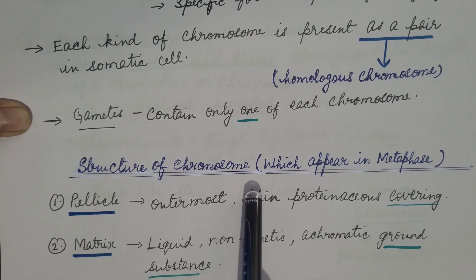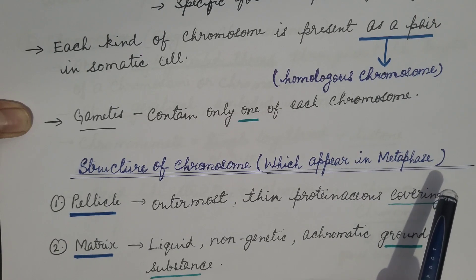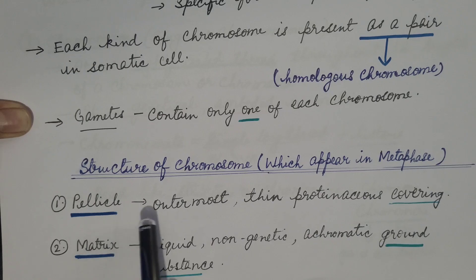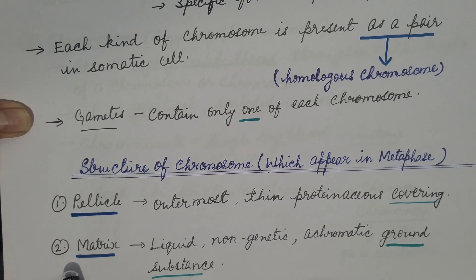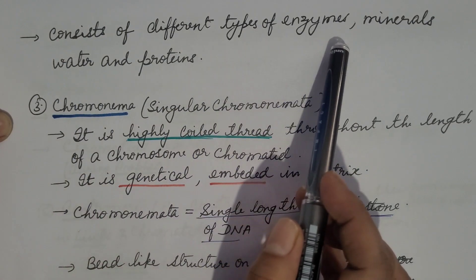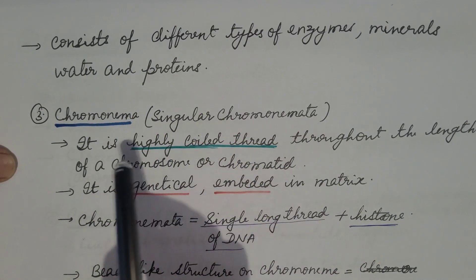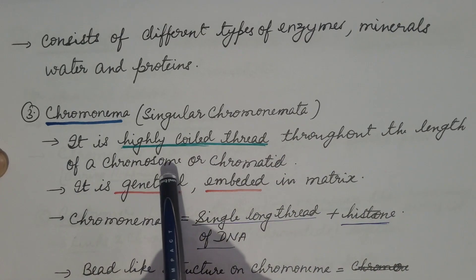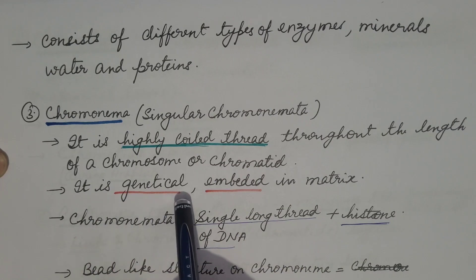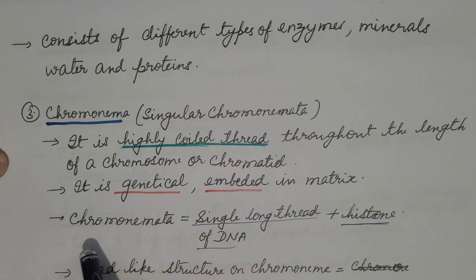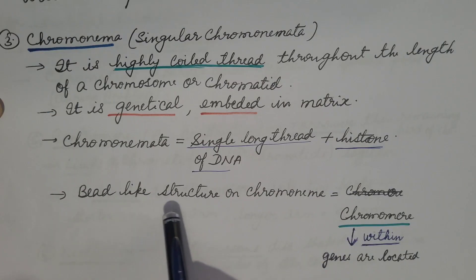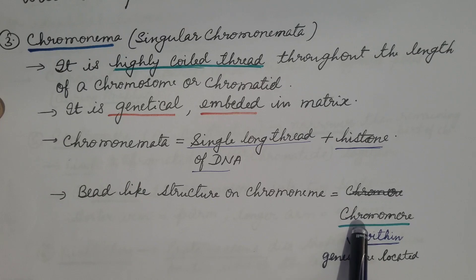Now let us discuss the structure of the chromosome as it appears at metaphase, when it is highly condensed. First is the pellicle — the outermost thin proteinaceous covering. Second is the matrix — the ground substance which is liquid, non-genetic, and achromatic; it consists of different types of enzymes, minerals, water, and proteins. Third is the chromonema (plural: chromonemata) — a highly coiled thread throughout the length of a chromosome or chromatid. It is genetic because it consists of DNA, the hereditary material, and is embedded in the matrix.